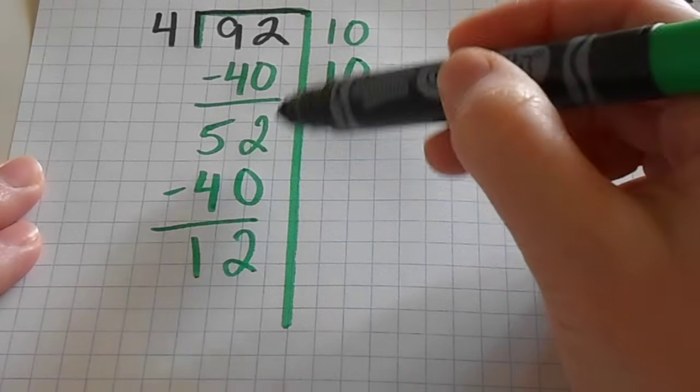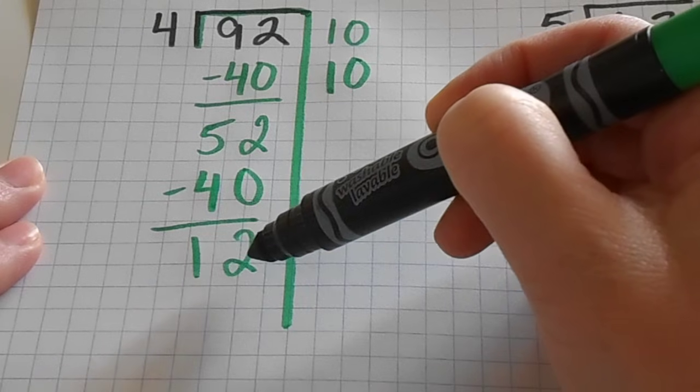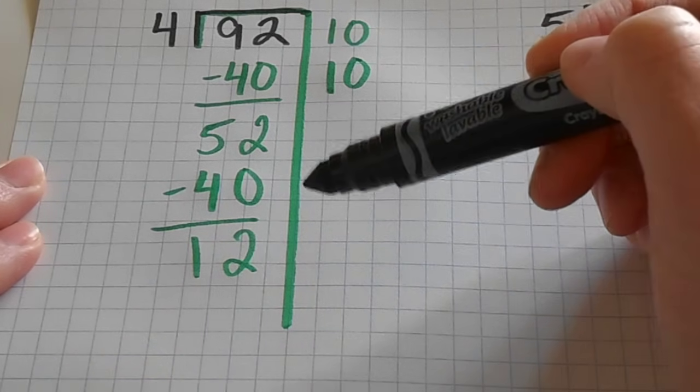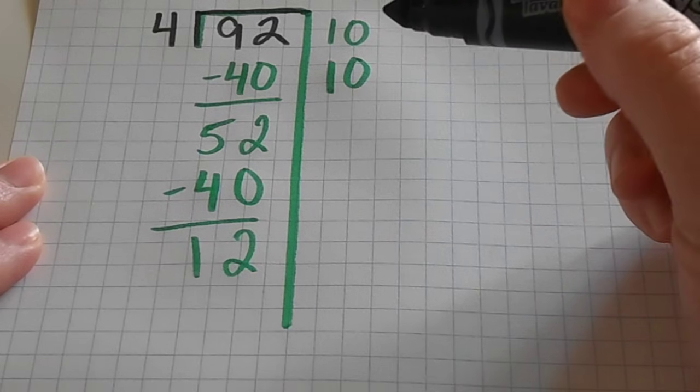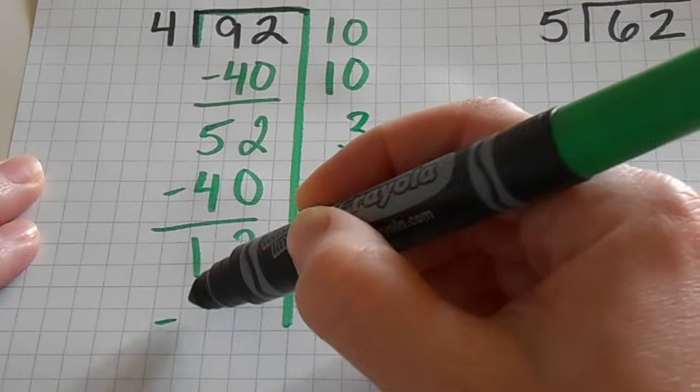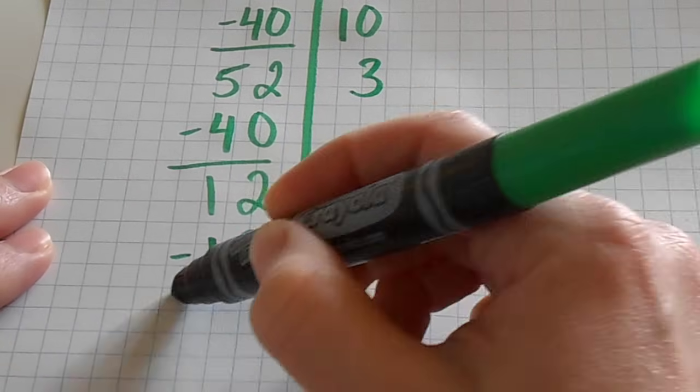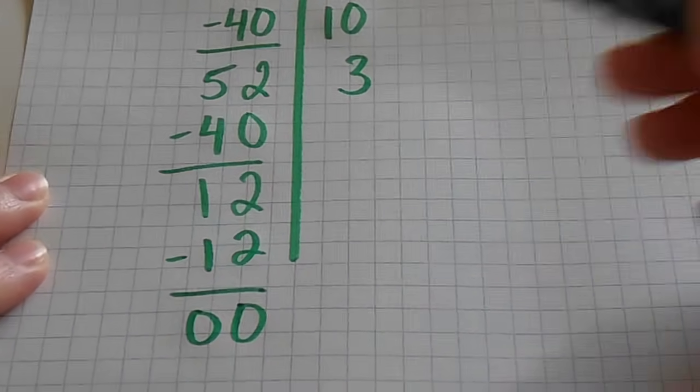Now I obviously can't take out another 10 groups of four from 12 because this is not big enough to take away 40 from. And this is where knowing my multiples is really handy. So if I know my multiples of four, I know that three groups of four equals 12. So that's going to come out exactly evenly. And I'm left with nothing down here at the bottom.